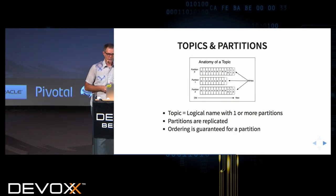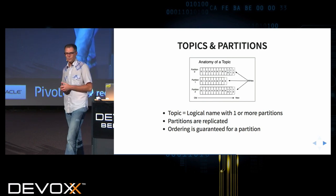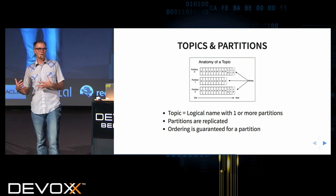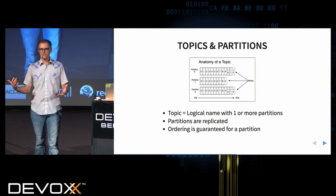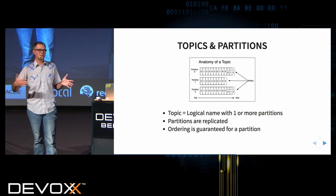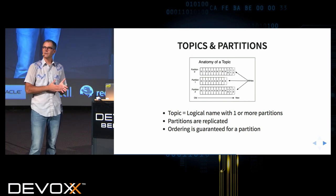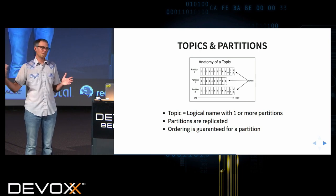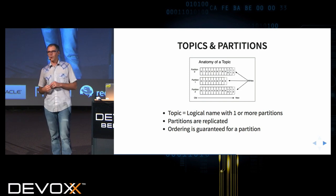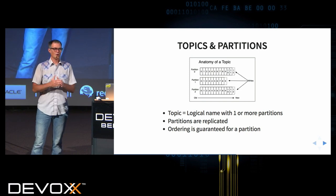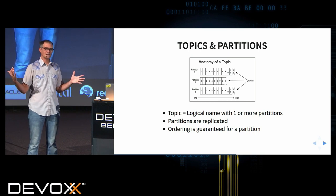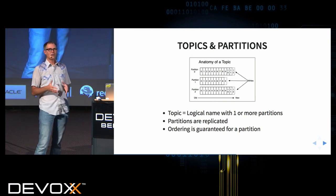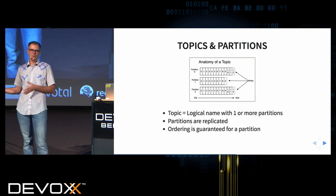Partitions are replicated, and this leads to one of the key values I mentioned earlier: ordering. When dealing with event streams, ordering is essential — especially in change data capture, where you really need to know the order of messages. Ordering is guaranteed for a partition. Across a topic there are one or more partitions, but ordering is only guaranteed within each individual partition, not across the whole topic.